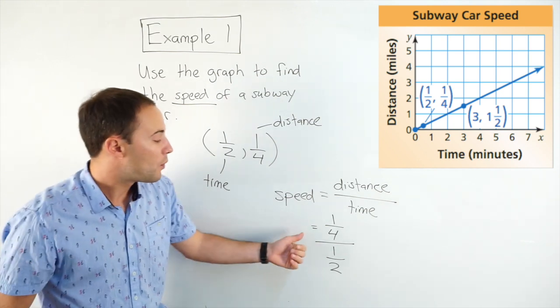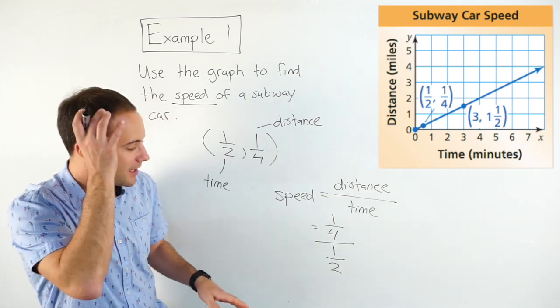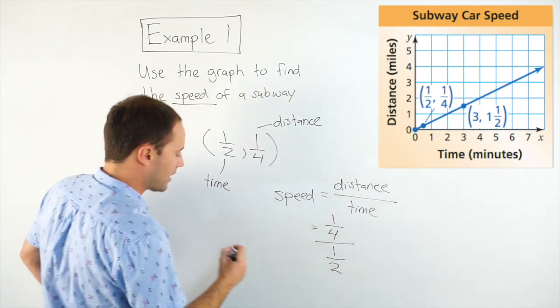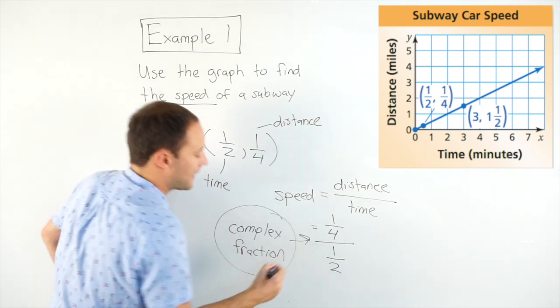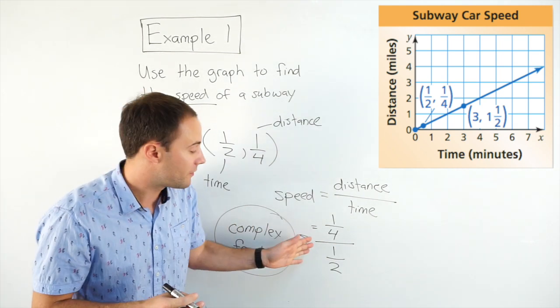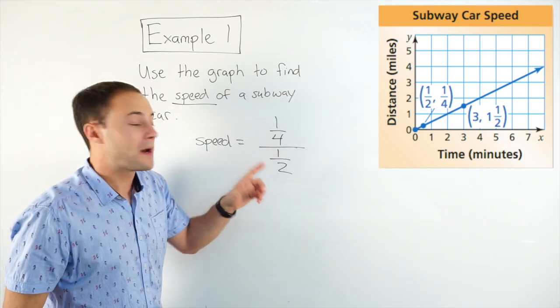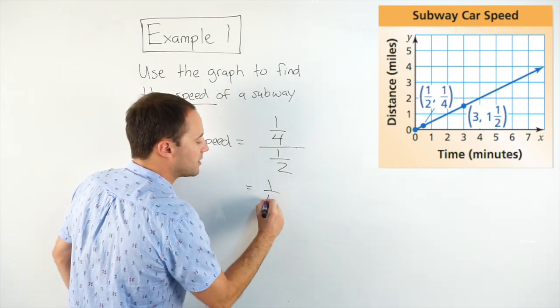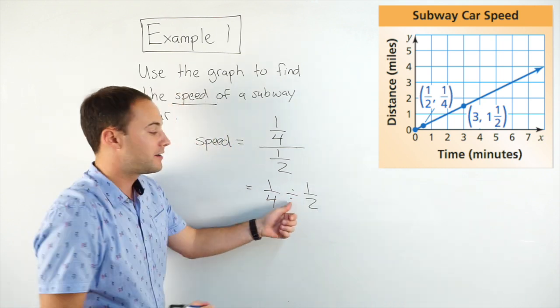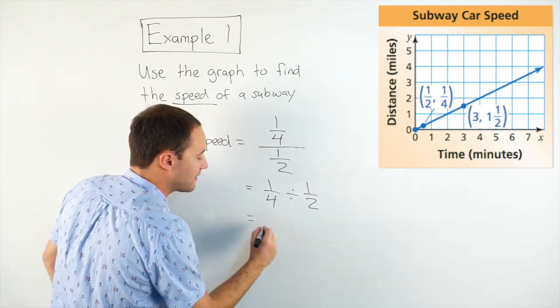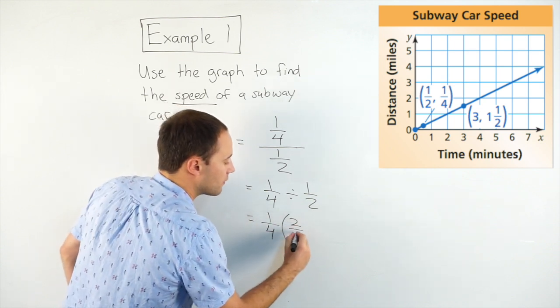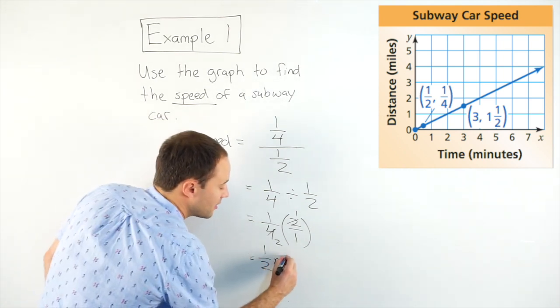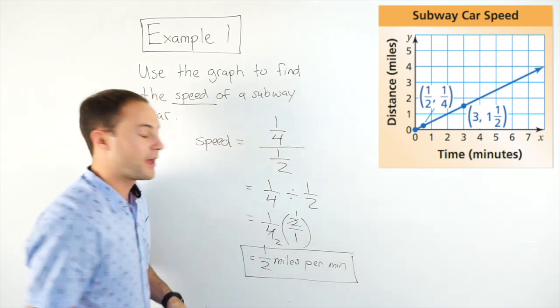Now we need to simplify. This right here is a special kind of fraction. If you notice, it looks weird, because you have a fraction within a fraction. And we call this a complex fraction. That's a complex fraction. When you have a fraction within a fraction. But to solve it, or to simplify it, it's really quite simple. So if I remember, this line right here means division. So this is 1/4 divided by 1/2. Dividing by a fraction, 1/4 divided by 1/2, divided by a fraction is the same thing as multiplying by its reciprocal. So I can rewrite this as 1/4 times 2 over 1. And if I simplify that, that's going to give me 1/2, and the units are miles per minute. So there is my speed.